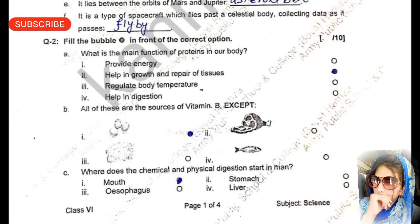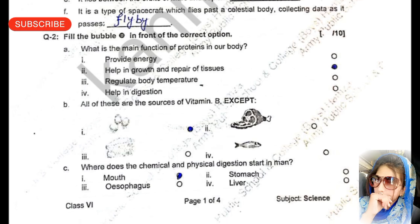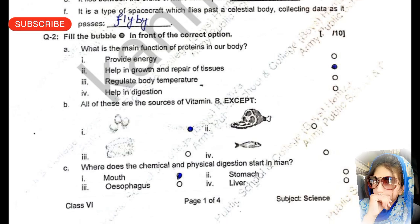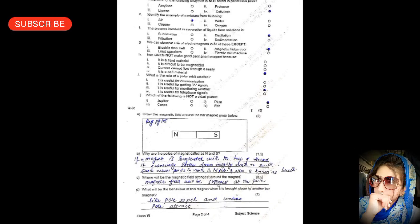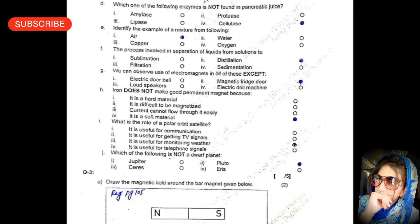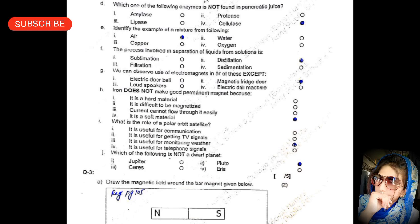All of these are sources of vitamin B except — option one is correct. Where does chemical and physical digestion start? The first option is correct.